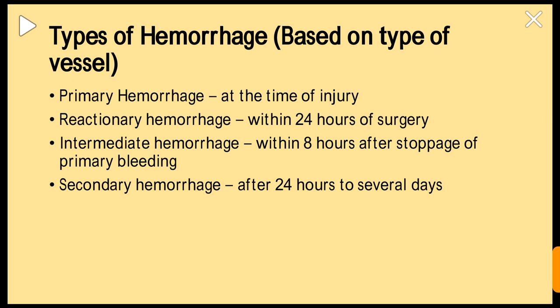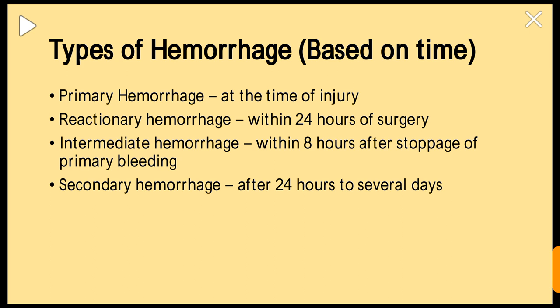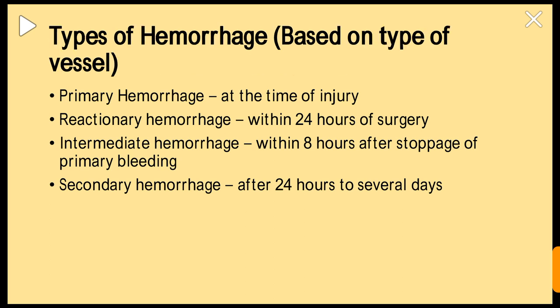Types of hemorrhage: based on the type of vessel, hemorrhage may be arterial, capillary, or venous. Based on timing, hemorrhage may be primary, reactionary, intermediate, or secondary.